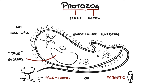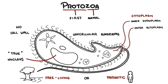Protozoa obtain nutrition from absorption of small molecules or by ingestion from the environment. They are predators preying on bacteria, algae, and even other protozoa species. The cytoplasm is frequently divided into the inner endoplasm and thin outer ectoplasm. The endoplasm contains granules where they store their food. The ectoplasm contains organelles, which are mainly responsible for movement.